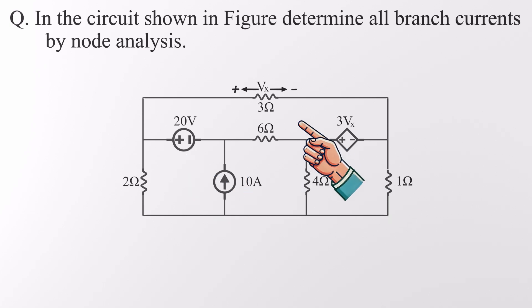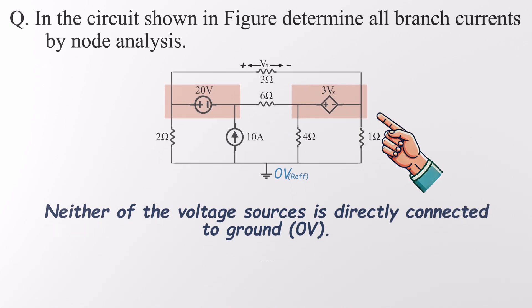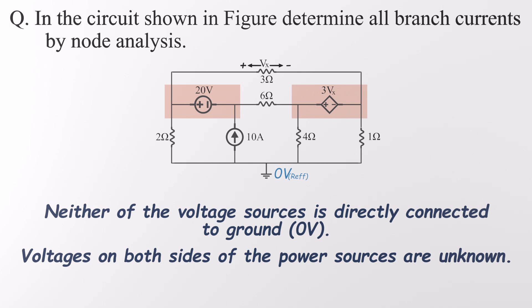It depends on the voltage across a specific resistor. Now let's pick a point to be our reference node. Here's the catch. Neither of the voltage sources is directly connected to ground. That means we can't immediately determine the voltages on either side of them. In fact, no matter where we place our ground, one of the voltage sources will always end up floating, not connected to the reference node. That's where things get interesting.